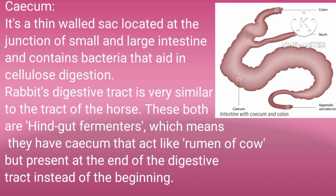The cecum is a thin-walled sac located at the junction of the small and large intestine. It contains bacteria that aid in cellulose digestion. The rabbit's digestive tract is very similar to the horse's digestive tract; both are hindgut fermenters, which means they have a cecum that acts like the rumen of a cow, but present at the end of the digestive tract instead of the beginning.